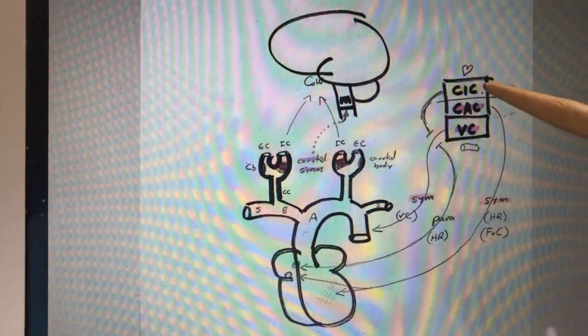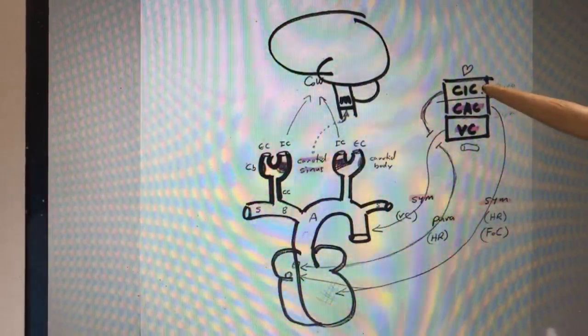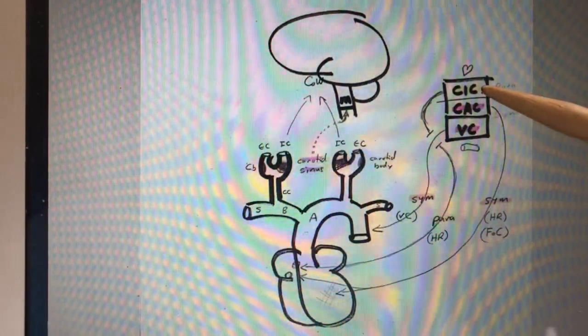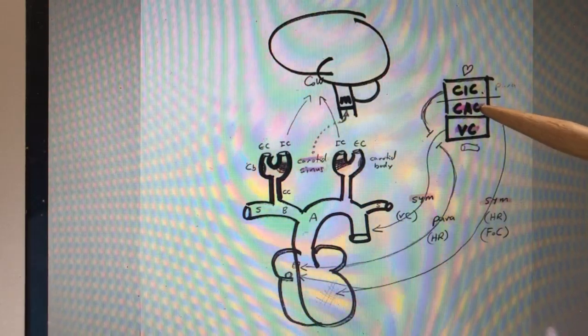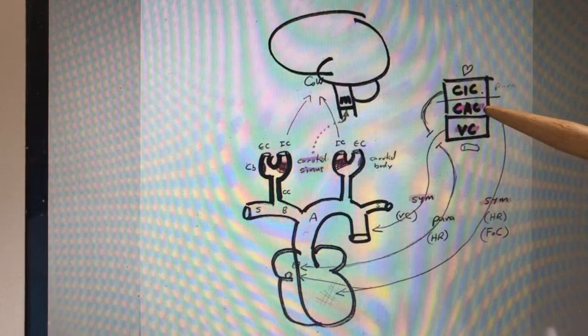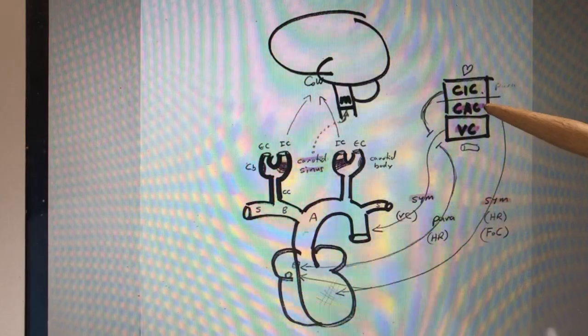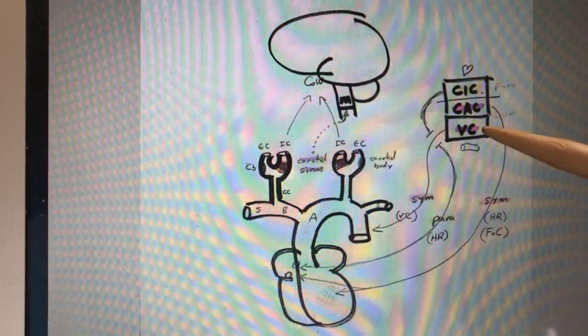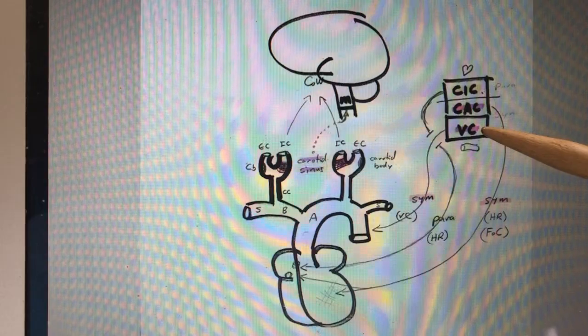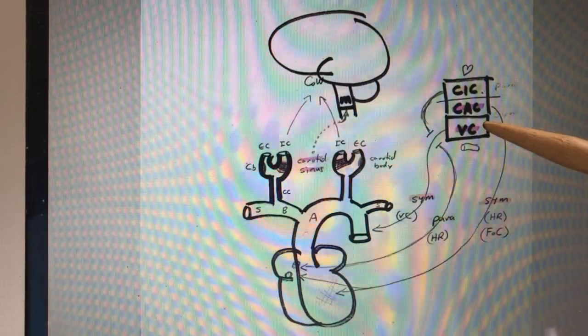The CIC is the cardiac inhibitory center, which tries to slow down the heart rate. The CAC is the cardiac acceleratory center, which tries to speed up the heart rate and force of contraction. The VC is the vasomotor center, which tries to regulate vasoconstriction of the blood vessels.